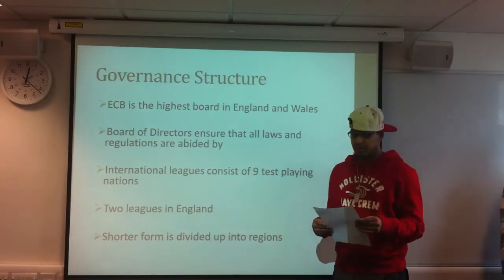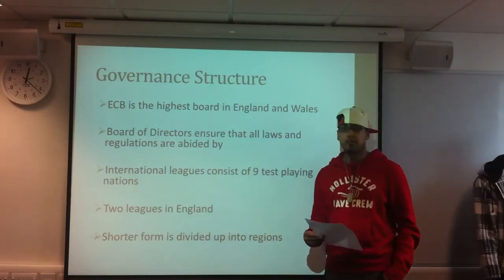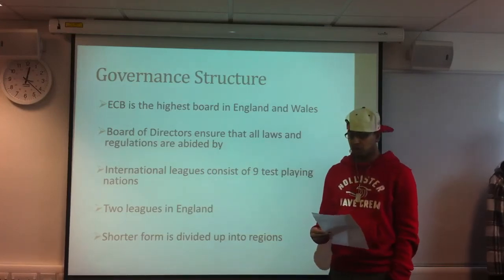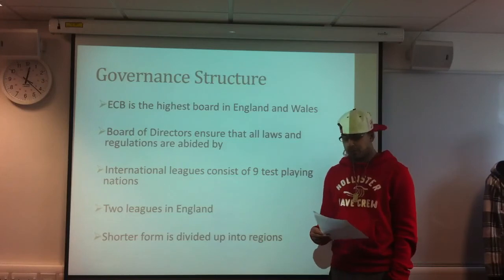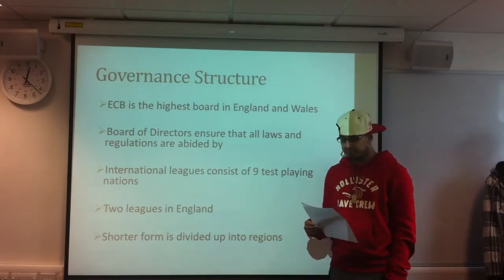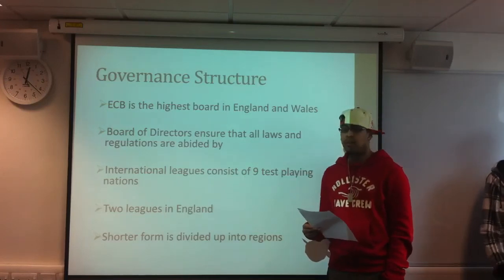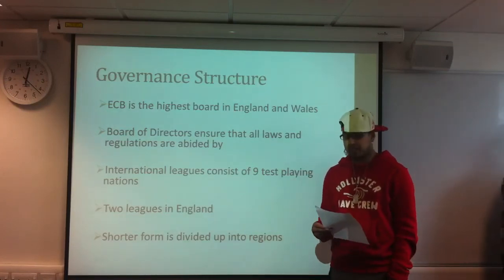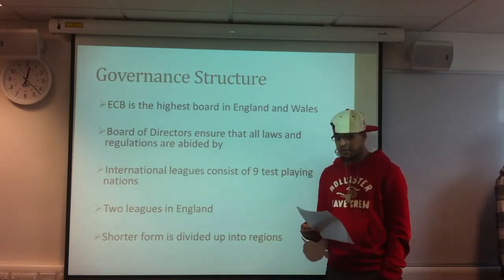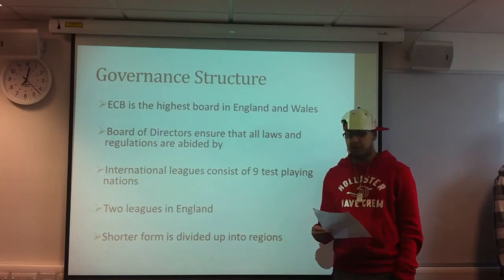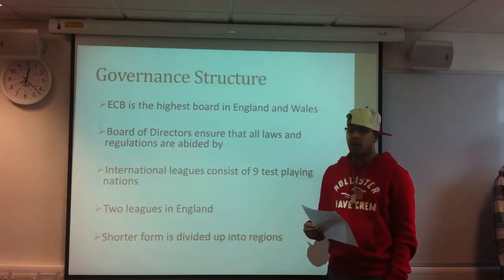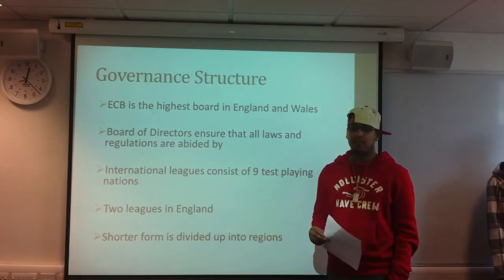In England the ECB is the highest board that all county teams must answer to. All individual teams have a board of directors who ensure that all rules are abided by. If a law was to be broken, the player would first report to the county board depending on the severity of the crime. There are nine test nations who constantly travel the world competing against each other in all three formats of the game. For the English county, there are two divisions that play four day cricket, known as first class cricket, and for the short version of the game, teams are split into regions.